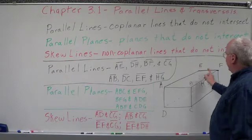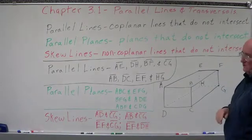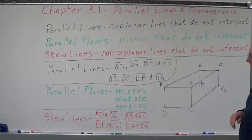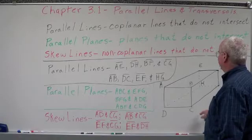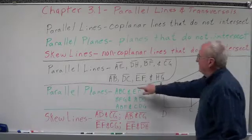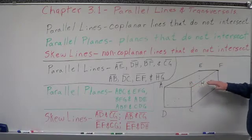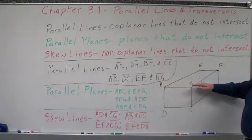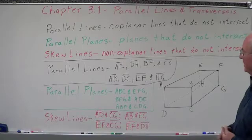Other parallel lines: AB and DC are parallel — top and bottom edge. AB is also parallel to EF, and AB is parallel to HG. You might say they're not on the same plane, but we can take a diagonal across and cut from the top edge to the back bottom edge, making one plane — so they would be parallel in that plane.